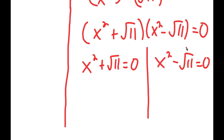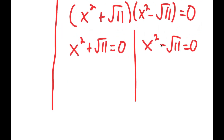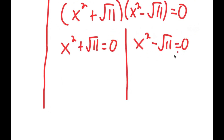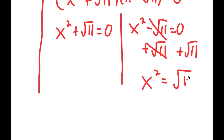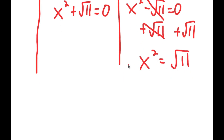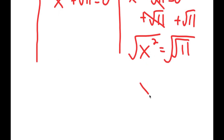For x squared minus the square root of 11 equals 0, I add the square root of 11 on both sides to get x squared equals the square root of 11. Taking the square root on both sides, the square root of x squared is x, and the square root of the square root of 11 is the fourth root of 11. This gives x equals positive or negative the fourth root of 11.